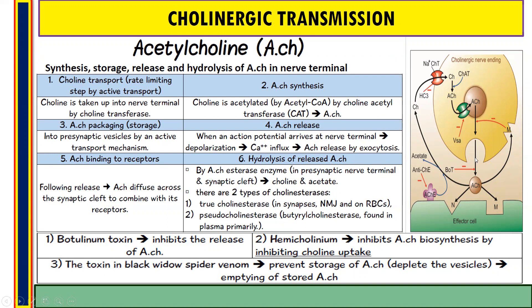The fourth step is how acetylcholine gets released into the synaptic cleft. When a nerve impulse or action potential arrives at the nerve terminal, it results in depolarization, causing calcium channels at the nerve ending to open, producing an influx of calcium ions. Calcium ions bring synaptic vesicles to fuse with the presynaptic nerve ending, releasing acetylcholine by exocytosis. The released acetylcholine then binds to receptors on the postsynaptic neuron — specifically muscarinic and nicotinic receptors, collectively called cholinergic receptors.